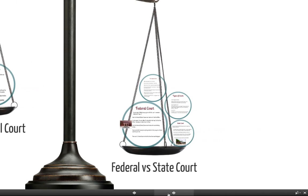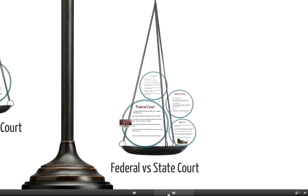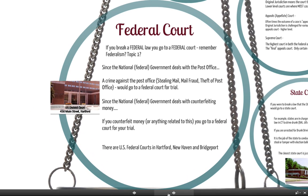It gets a little bit more complex when we get to federal versus state court. You go to a federal court if you break a federal law or are having a disagreement about a federal issue. Remember federalism — topic one in this unit. When you had your Venn diagram, on one side was the job of what the national government did, and on the other side was the state government. This is a good way to think about federal court as well.